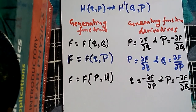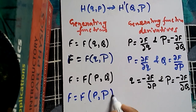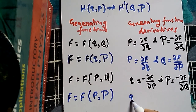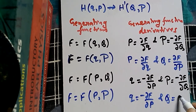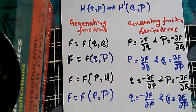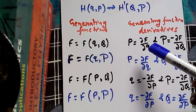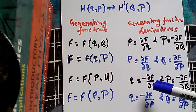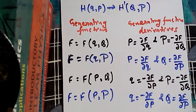A third type of generating function is a function of small p and capital Q. From this: small q equals minus del F by del small p, and capital P equals minus del F by del capital Q. The fourth type is a function of small p and capital P, giving: small q equals minus del F by del small p, and capital Q equals del F by del capital P. The pattern is: differentiation with respect to small q gives small p, with respect to small p gives small q, with respect to capital Q gives capital P, and with respect to capital P gives capital Q.